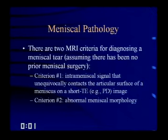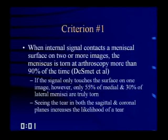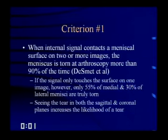When internal signal contacts a meniscal surface on two or more images, the meniscus will be torn at arthroscopy more than 90% of the time. If the signal only touches the surface on one image, then about 55% of medial signal abnormalities and 30% of lateral signal abnormalities represent true tears. Seeing the tear in both the sagittal and coronal planes will increase the likelihood that the tear is a true tear.